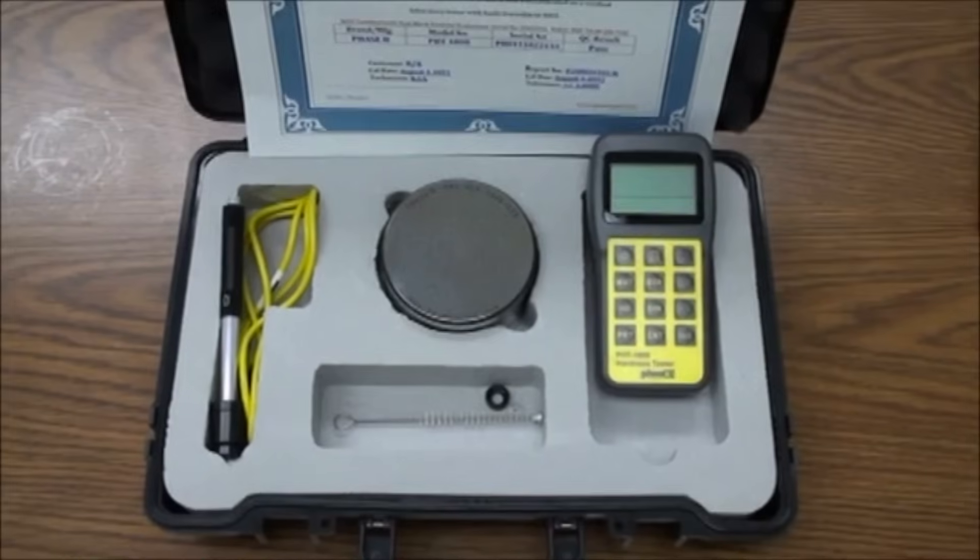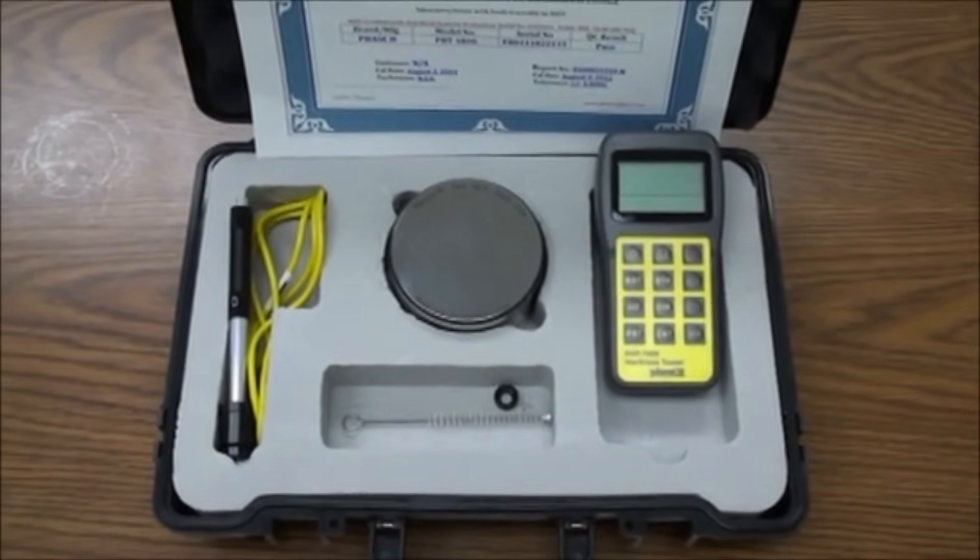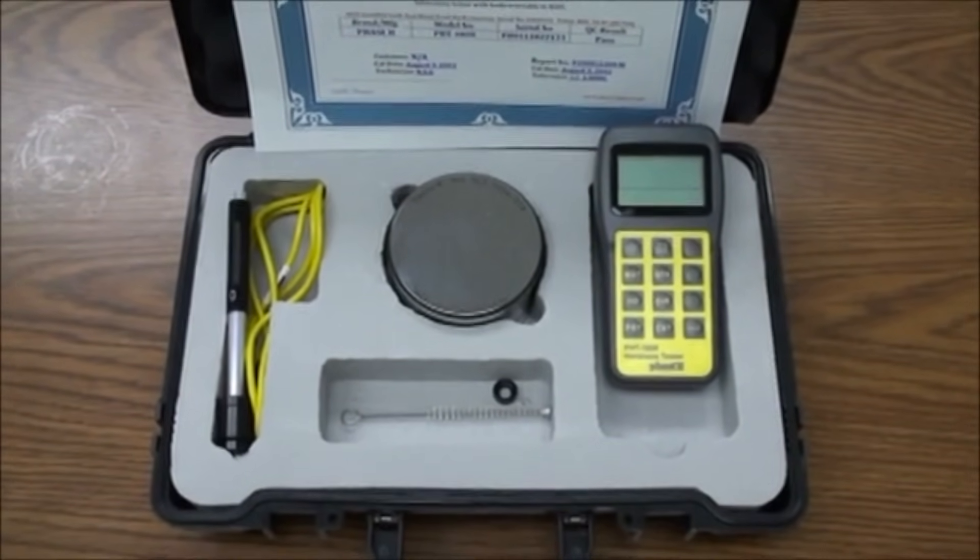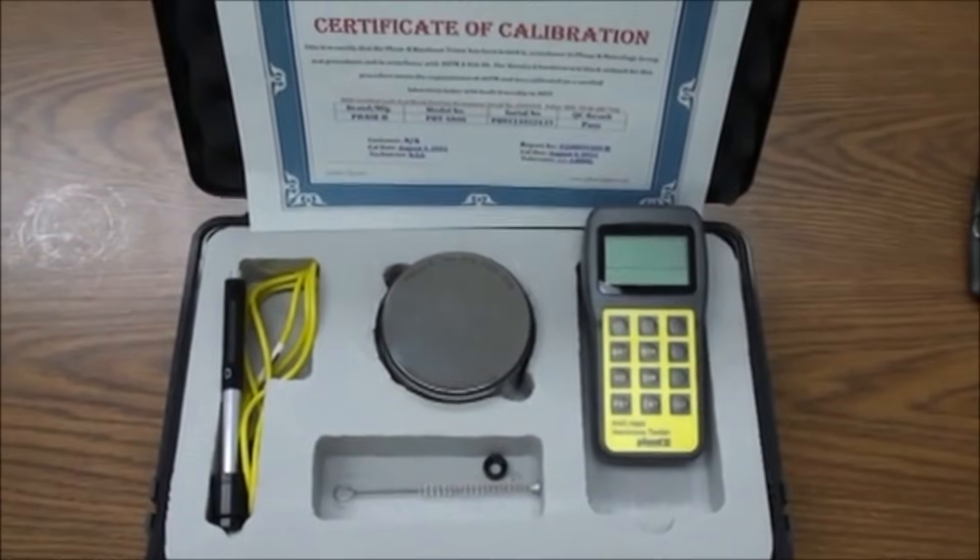The PHT1800 is designed to test metals, primarily steels, cast iron, aluminum alloys, and copper alloys.